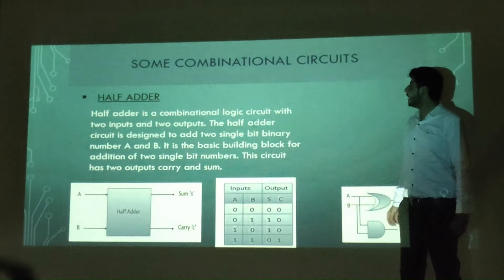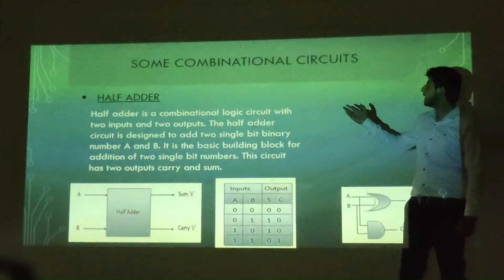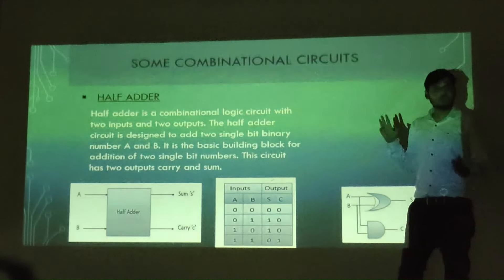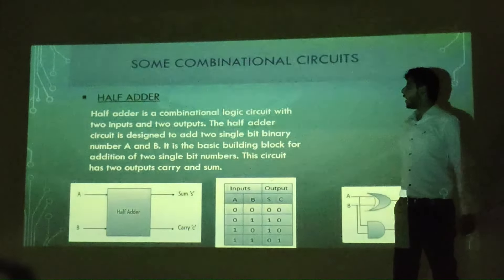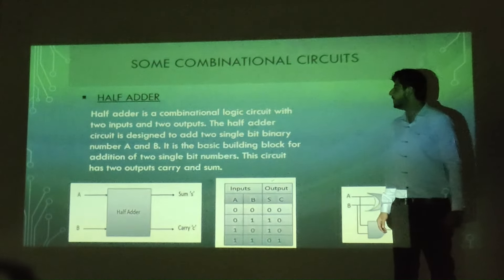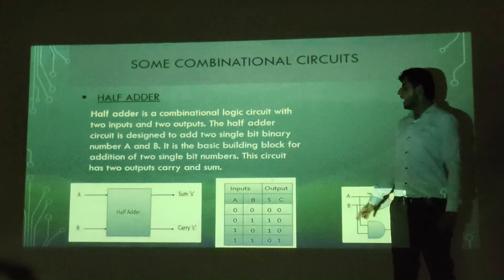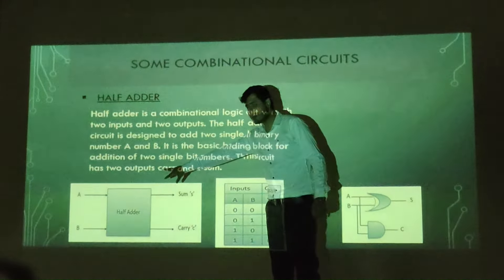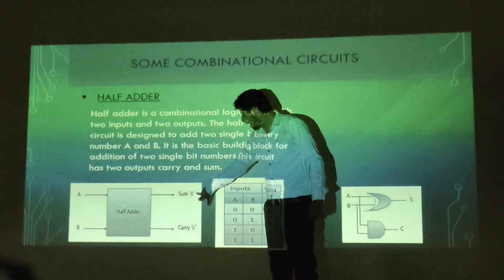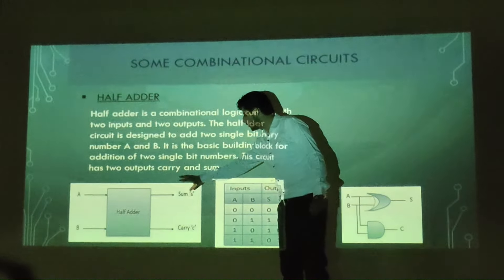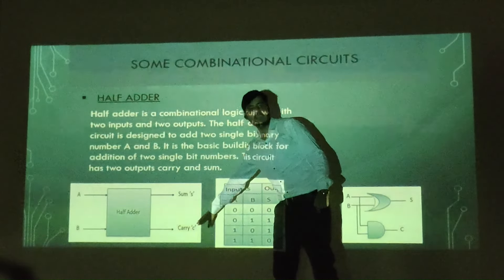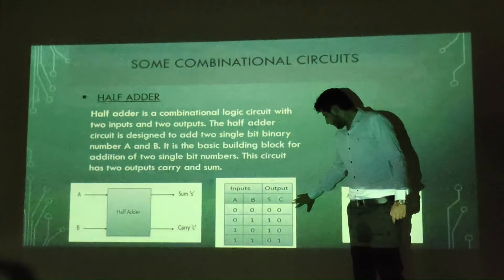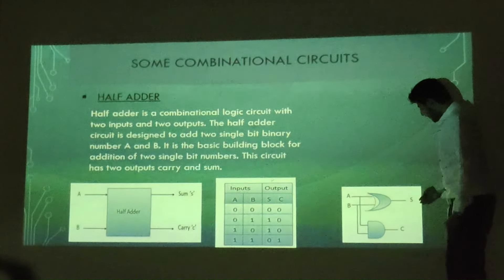Now let's discuss some combinational circuits. The first is the half adder. A half adder is a combinational logic circuit with two inputs and two outputs. It is designed to add two single-bit binary numbers A and B. The two outputs are sum S and carry C, where sum gives the addition result and carry gives the carry output.